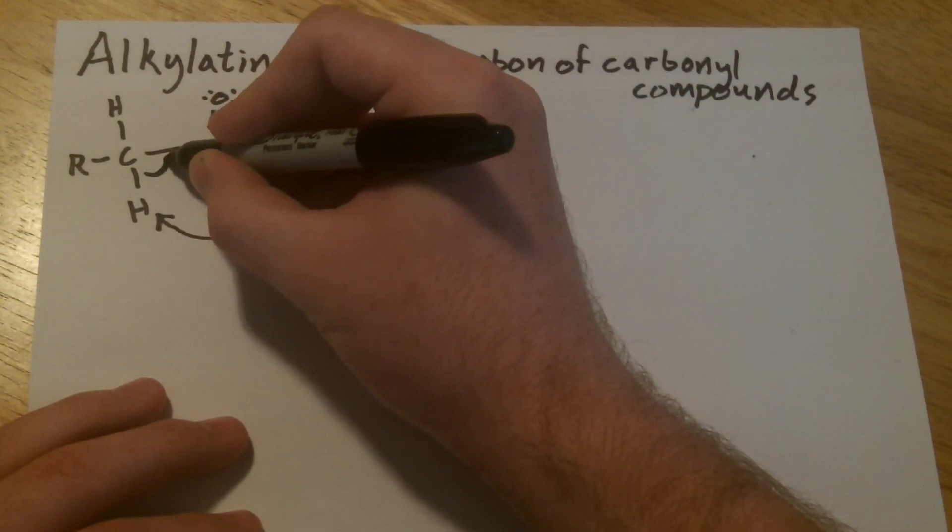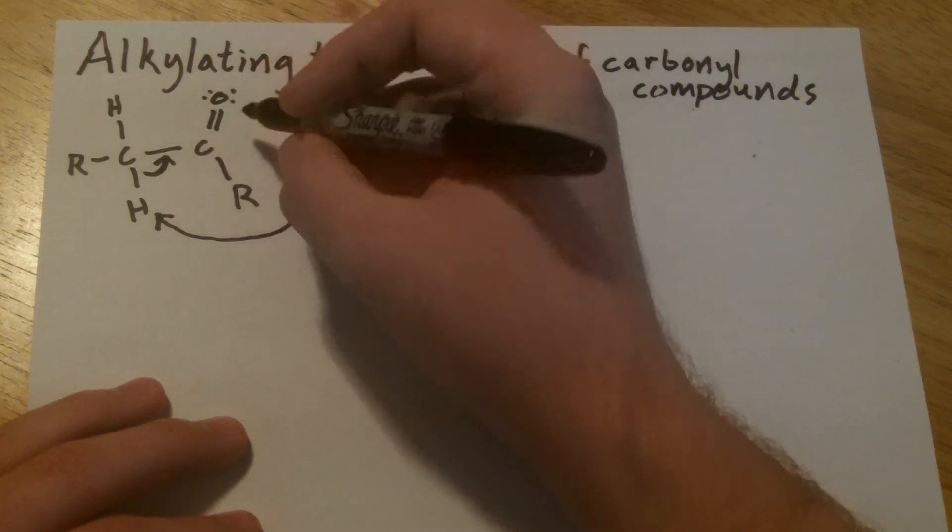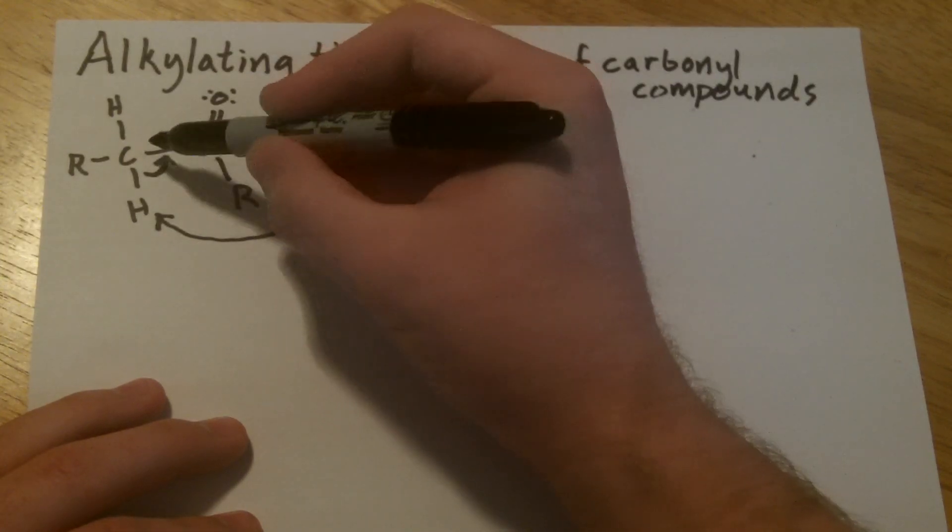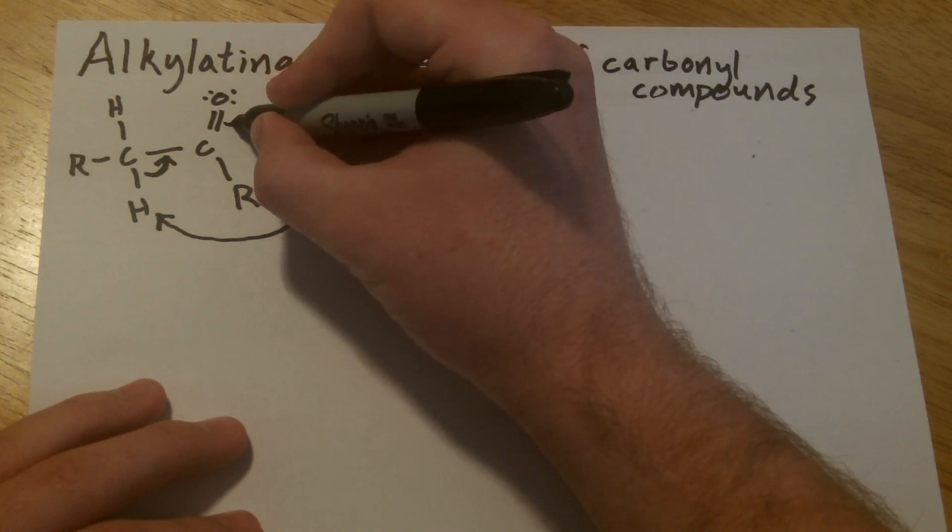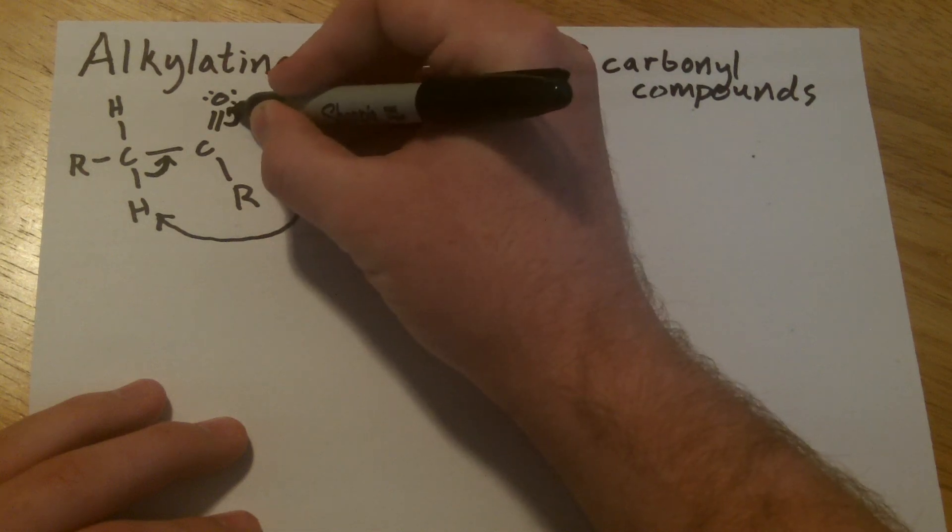This is going to break that bond and form a pi bond between the carbonyl carbon and the alpha carbon. Because carbon can only have four bonds to it, this is going to break the pi bond in the carbonyl and kick those electrons up onto oxygen.